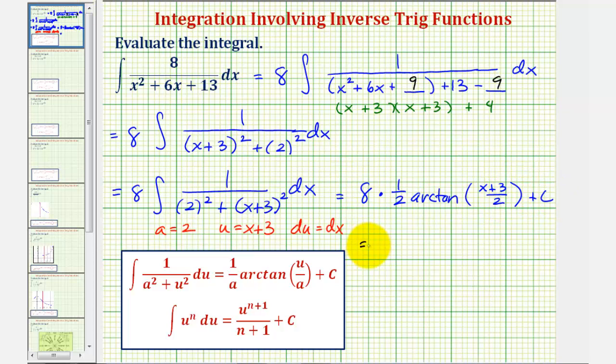Simplifying, our antiderivative function is four arctangent of the quantity x plus three divided by two, plus c.